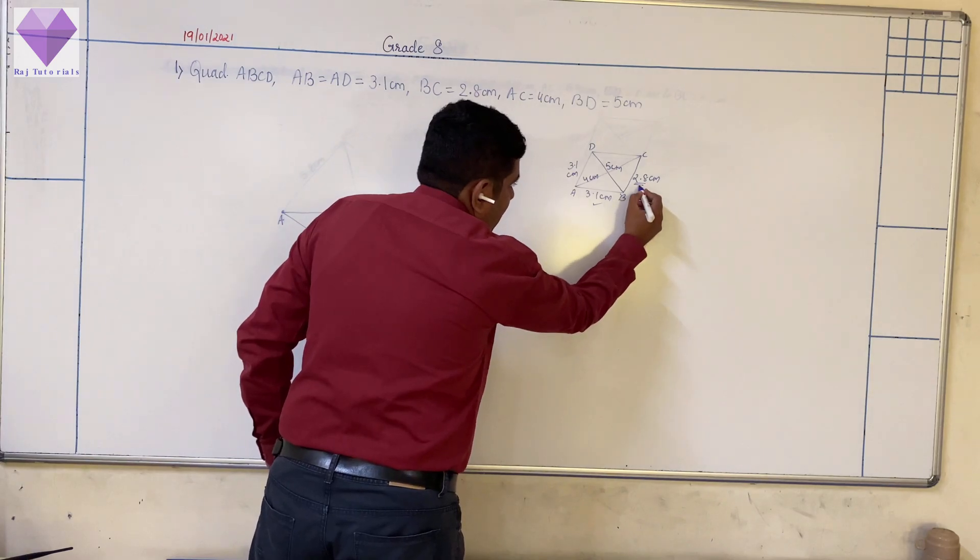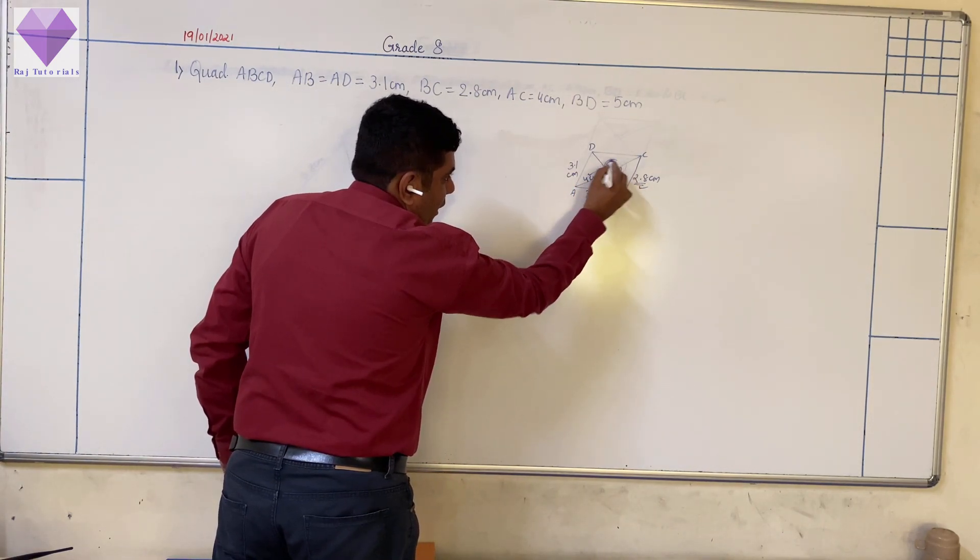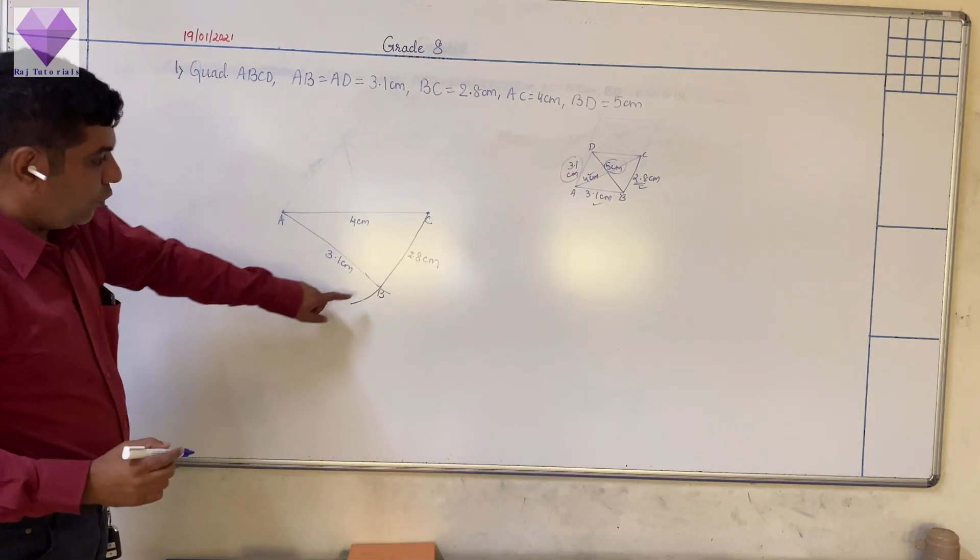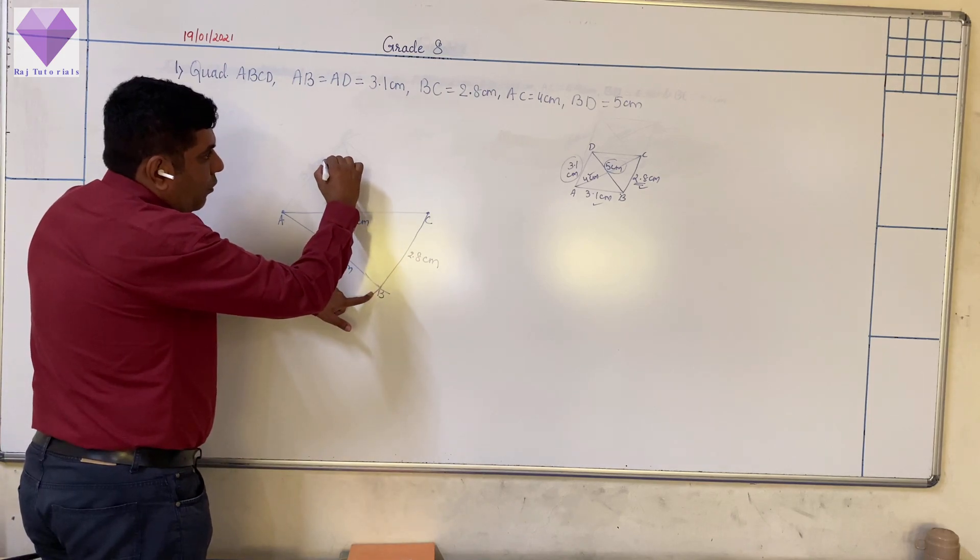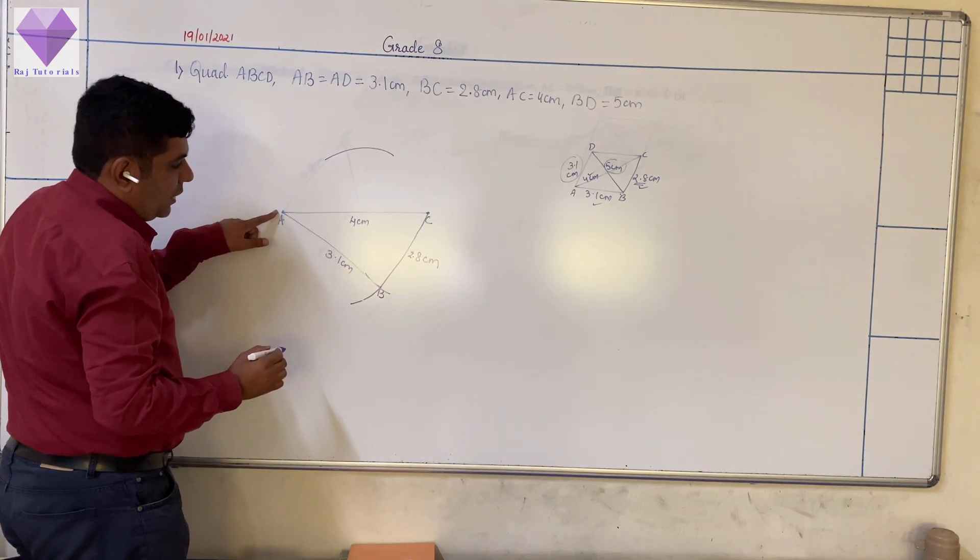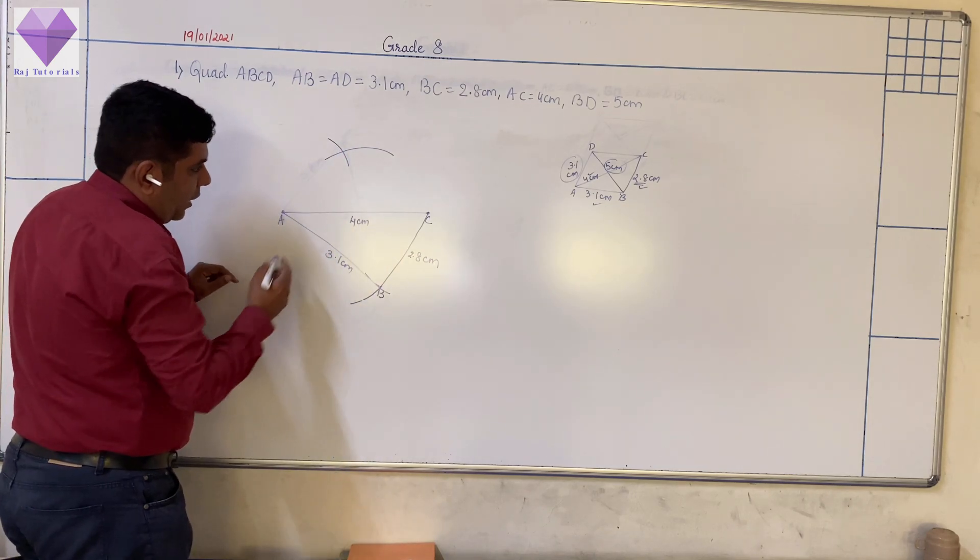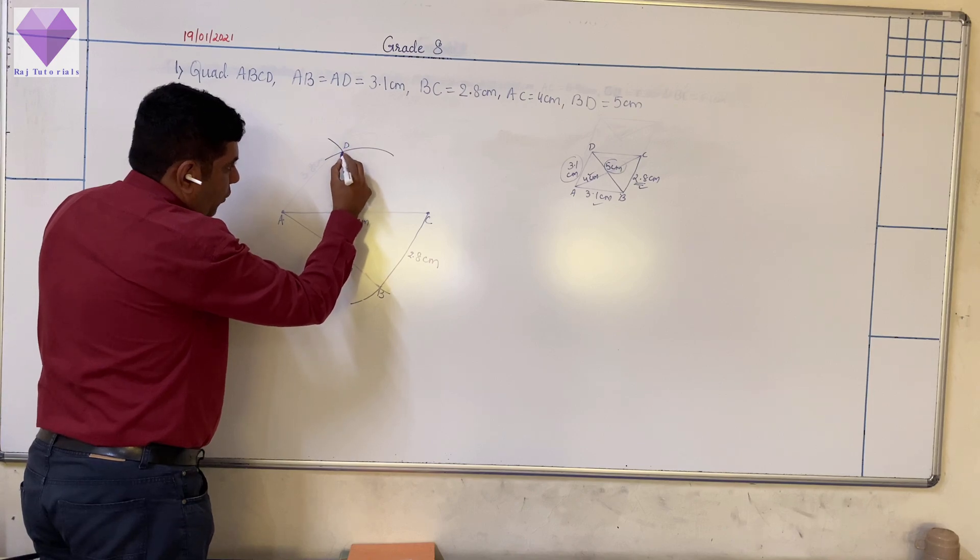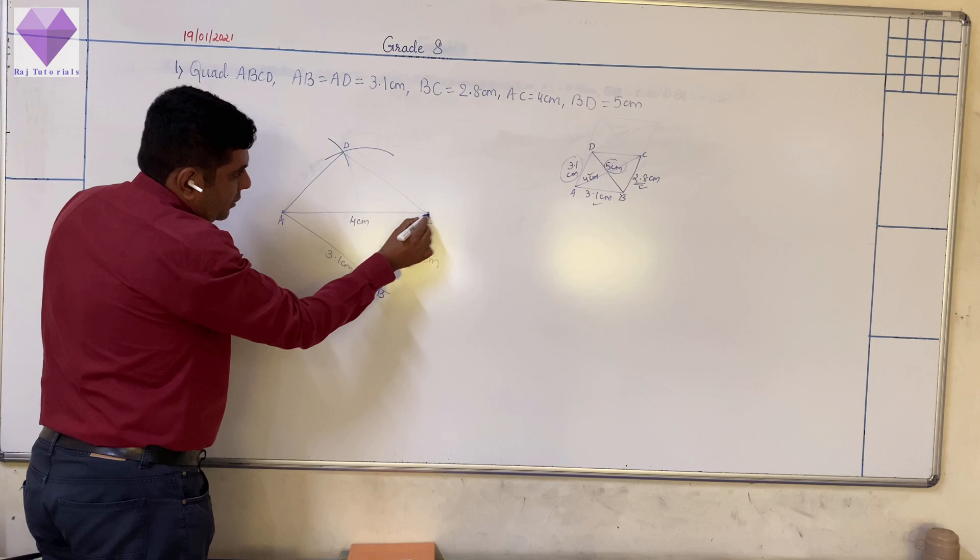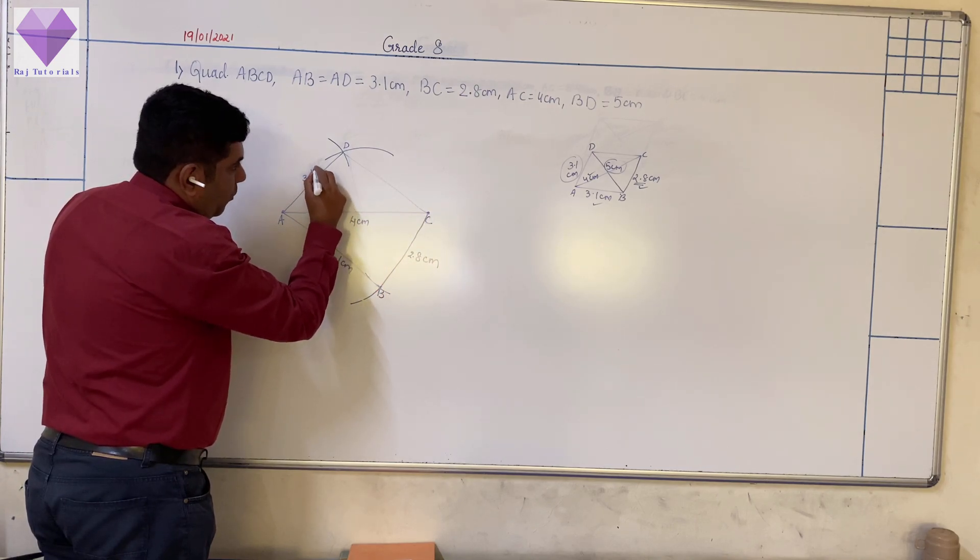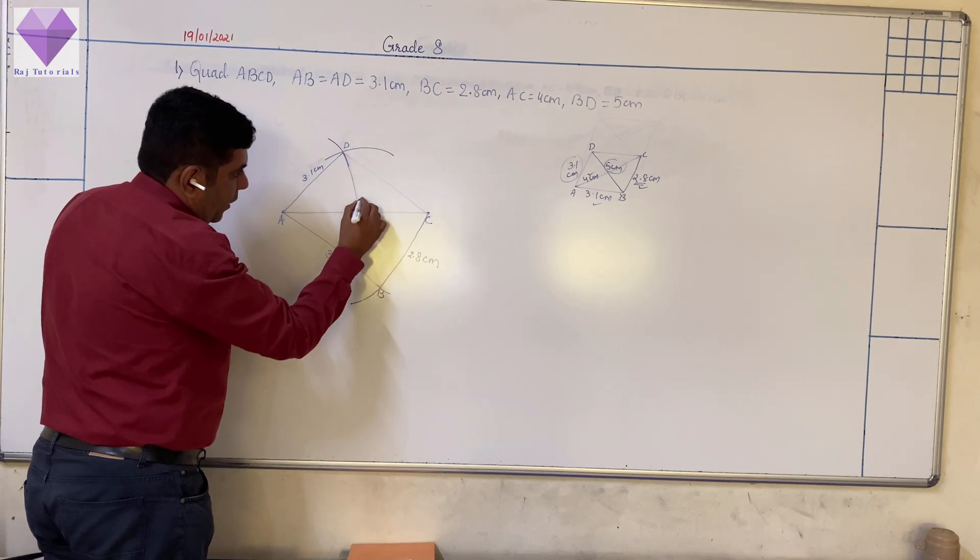Now, this I did, this I did. This I have done. So these two are remaining. So now, what I will do? With B as center and 5 centimeter radius, I will draw an arc. And with A as center and 3.1 centimeter, I will draw an arc. So this will be my D point. Then I will join AD and BD. So this will be my 3.1 centimeter and BD is my 5 centimeter.